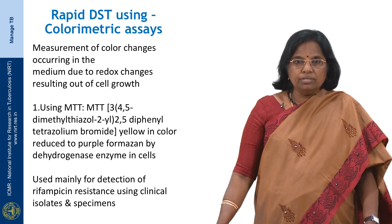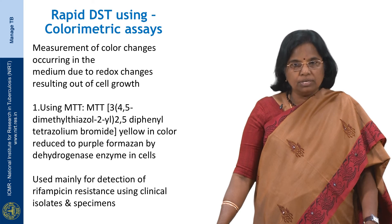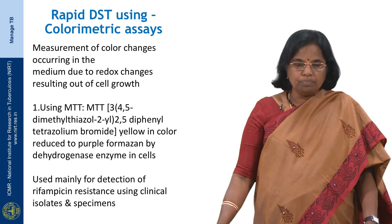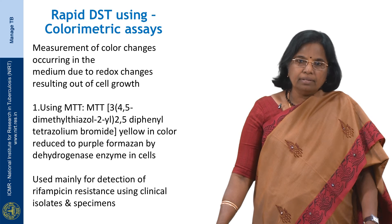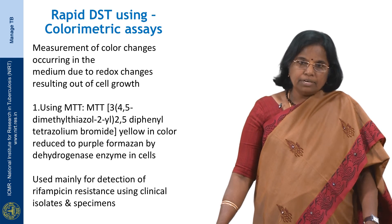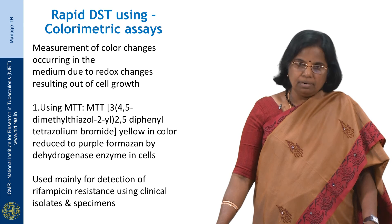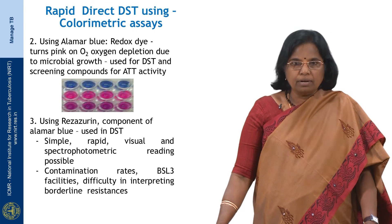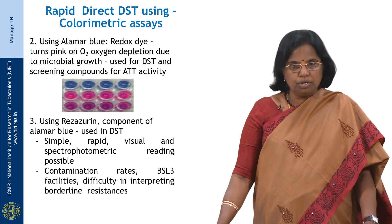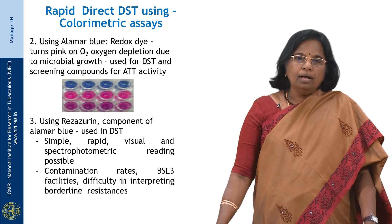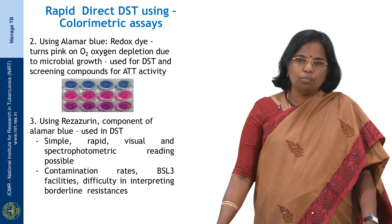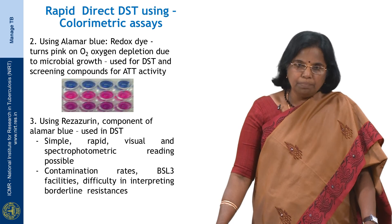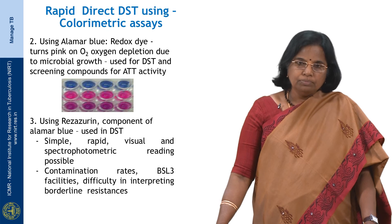Rapid DST using colorimetric assays is based on measurement of colour changes occurring in the medium due to redox changes resulting from microbial growth. The first is MTT — dimethylthiazole diphenyltetrazolium bromide — which is originally yellow in colour but gets reduced to purple formazone by the dehydrogenase enzyme in the cell. This is used mainly for detection of rifampicin resistance using clinical isolates and specimens. The next is the Alamar blue assay, a redox dye that turns pink due to oxygen depletion resulting from microbial growth, used for DST as well as screening compounds for anti-TB activity. The third is resazurin, a component of Alamar blue, with the same principle. All these methodologies are simple, rapid, and both visual and spectrophotometric readings are possible. However, they are highly prone to contamination and require BSL 3 facilities.